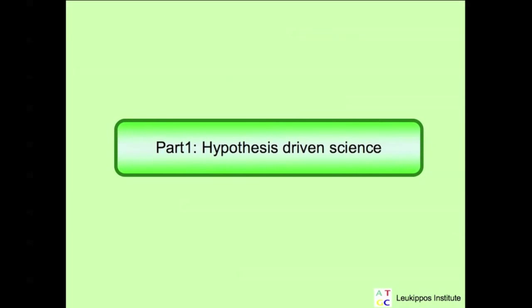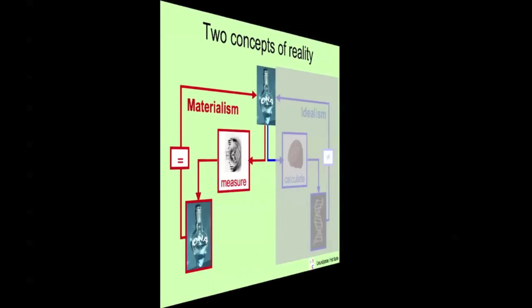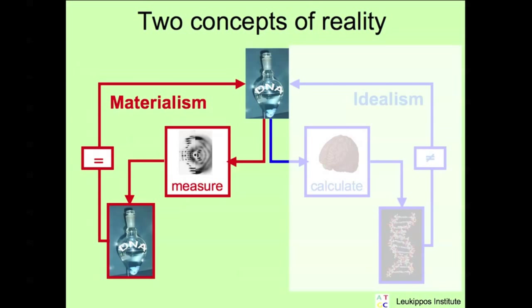Part one. Hypothesis-driven science. About 2500 years ago, there was a glorious awakening. Greek philosophers argued that the universe is noble. Why? Their reasoning, it is ordered. About 600 before Christ, we meet the pioneers of science.